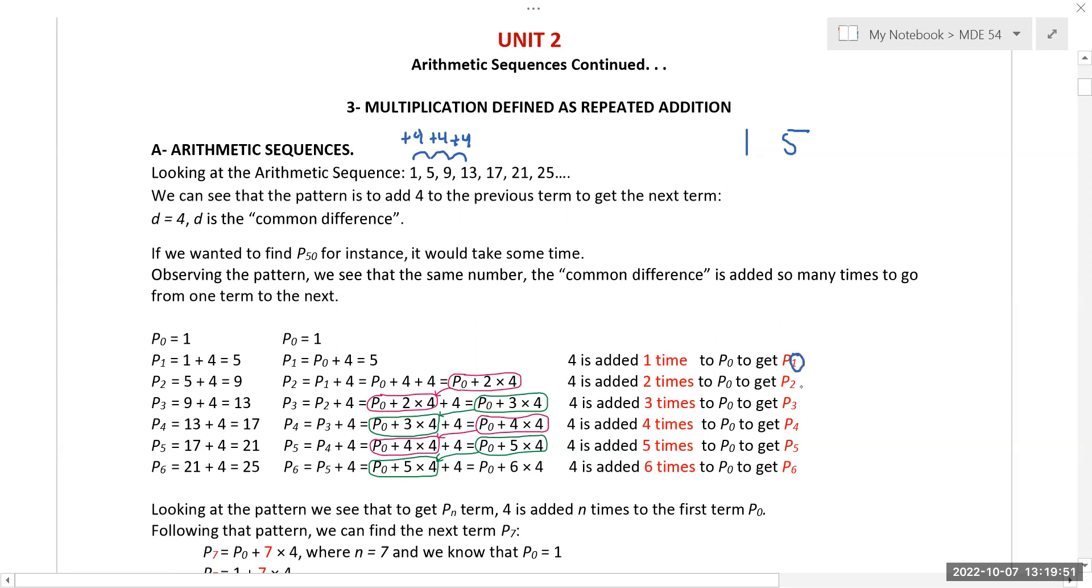This P_1 means that I added it one time. P_4 actually means I added it four times. That's why we start at P_0 and then you add it once, twice, etc. So P_6 means you added it six times, which can be written as multiplication. P_6 is P_0 plus 6 times 4, where 4 is our d or common difference.